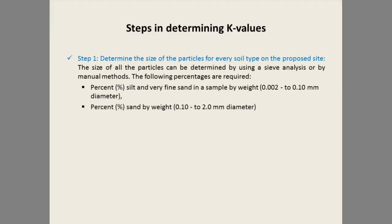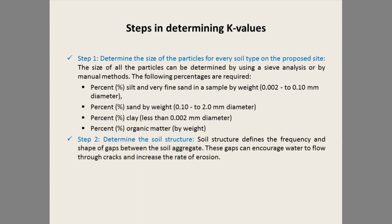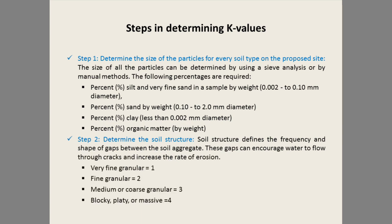The steps in determining K values: the first step is determining the particle size for every soil type of the proposed site. The size of all the particles can be determined using sieve analysis or by manual methods. The following percentages are required: percent silt and very fine sand, percent sand, percent clay content, and percent organic matter.